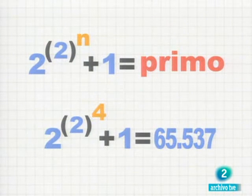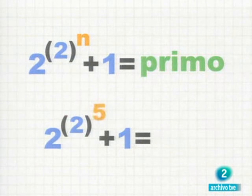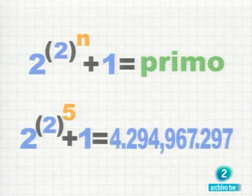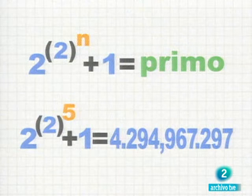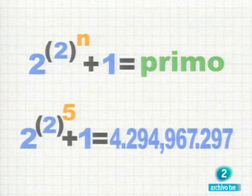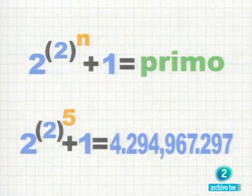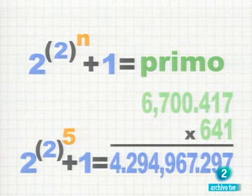Sin embargo, la prodigiosa calculadora mental de Euler iba a tirar por los suelos esta afirmación, con el siguiente valor de n. No es tan fácil decidir si este número tiene divisores y Fermat ni lo intentó. En cambio, Euler encontró los factores.